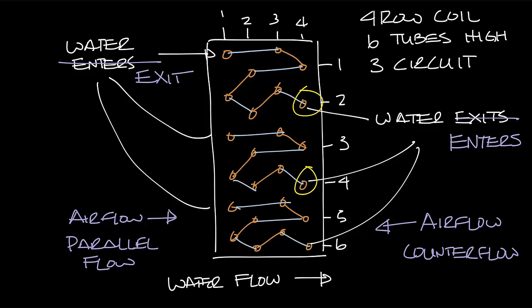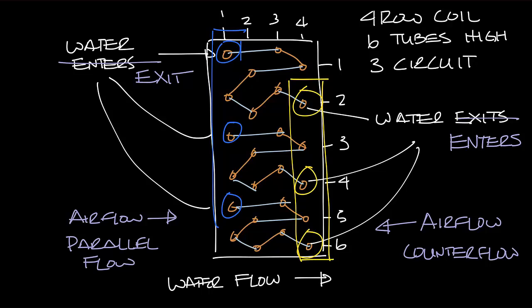So water would enter here, here, and here and there would be a header that connected all of those. Water would exit over here, here, and here and there's a header that connects all of those. So the piping comes into the header and supplies all three circuits at the same time.